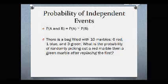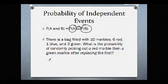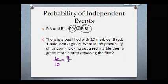To find the probability of independent events — events that don't affect one another — all you simply do is find the probability of the first one and multiply it times the probability of the second one. For example, there's a bag filled with ten marbles: six red, one blue, and three green. What is the probability of randomly picking out a red marble? A red marble is going to be six out of ten, which can be reduced to three out of five.